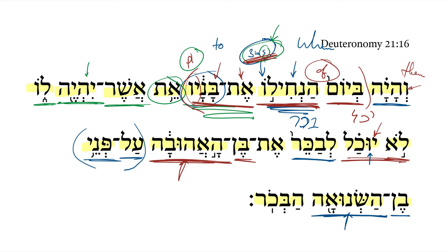And then we get this final statement: the firstborn. This would be something like 'the firstborn he is.'